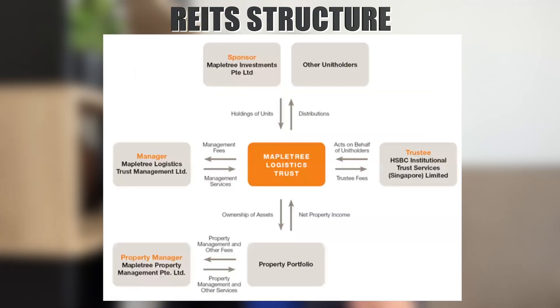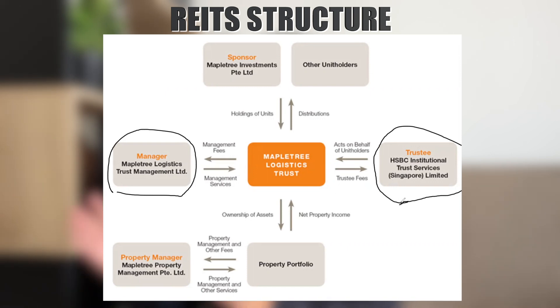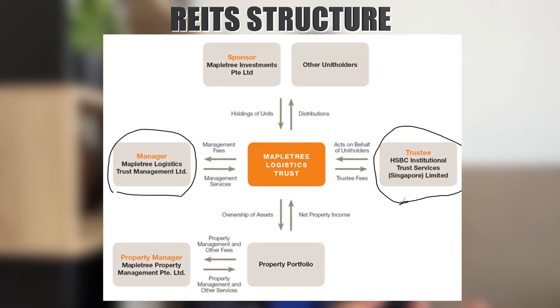Let's look at how the trust structure looks for a REIT and a business trust. This is a REIT structure — Mapletree Logistics Trust. The manager is called Mapletree Logistics Trust Management, which is under Mapletree. But the trustee is under HSBC Institutional Trust Services Limited. So they are two independent entities — HSBC Institutional Trust Services has no relationship with Mapletree Logistics Trust Management. This is where they separate the manager and the trustee.